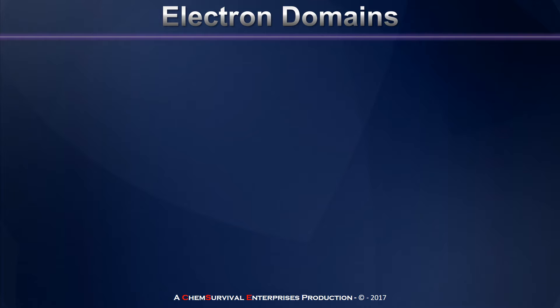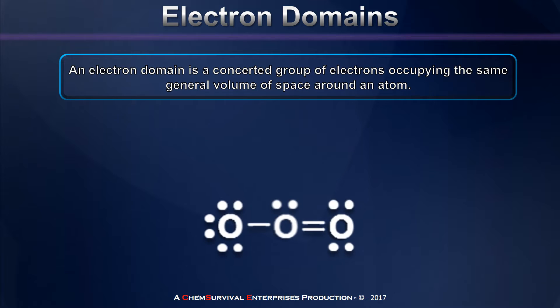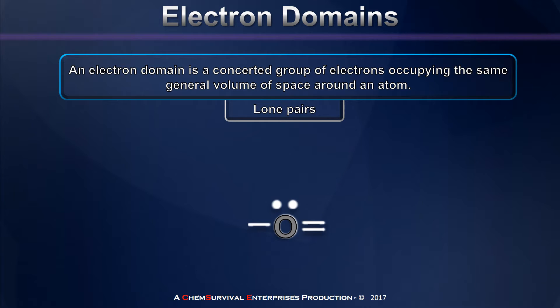We'll begin by discussing electron domains. An electron domain is most simply defined as a concerted group of electrons that occupies the same general space around a central atom. Let's take an example like ozone and focus in on that central oxygen atom. Here ozone has a lone pair on its central atom — this would be a concerted group of electrons that occupy that orbital that the lone pair is in, so this would qualify as an electron domain.